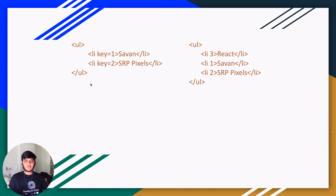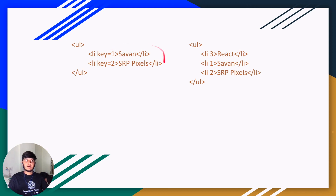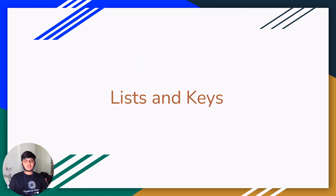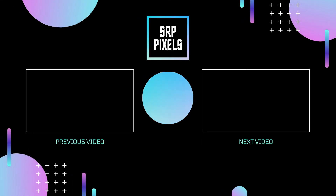When keys are provided — say SRP Pixels has key=1 and Sarvan has key=2 — React can check the keys. When 'React' is inserted at the start with a new key, React recognizes that keys 1 and 2 just moved down one position. It only changes one element rather than re-rendering all of them. That was everything for lists and keys in React.js — I hope you enjoyed the video, share your views in the comments below.